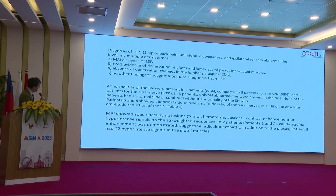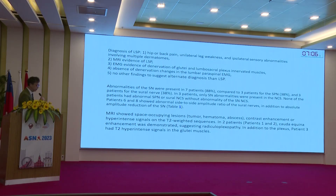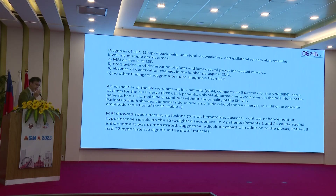In our published series, patients had unilateral leg weakness and variable sensory symptoms. Our criteria required MRI evidence of lumbosacral plexopathy, denervation in particular muscle groups, absence of denervation changes in the lumbar paraspinal EMG, and no other diagnosis suggesting alternative causes. Eighty-eight percent of patients had abnormalities of the saphenous nerve compared to the other commonly used nerves — the superficial peroneal and sural nerves. In three patients, only the saphenous nerve abnormalities were present.